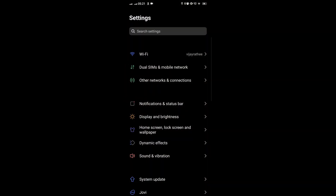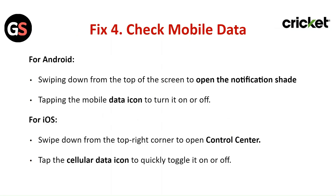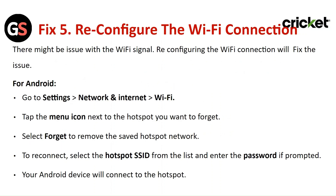Fix four: Check mobile data. For Android, swipe down from the top of the screen to open the notification shade, then tap on the mobile data icon to turn it on or off. For iOS, swipe down from the top right corner to open the Control Center, then tap on the cellular data icon to quickly toggle it on or off.